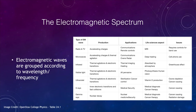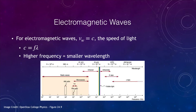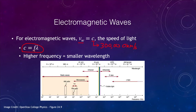For electromagnetic waves, the wave speed equals C, the speed of light, which is 300,000 kilometers per second. That applies to all the different forms of wavelengths that we see. From radio waves to gamma rays, we use the equation that says the speed of light equals frequency times wavelength. So if we know the frequency or the wavelength, we can figure out the other, because C is just a constant.